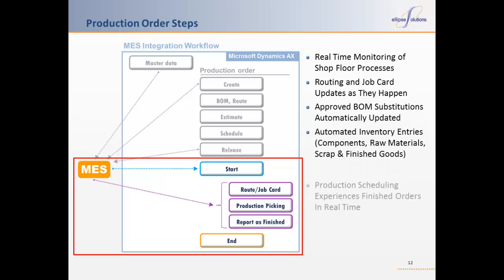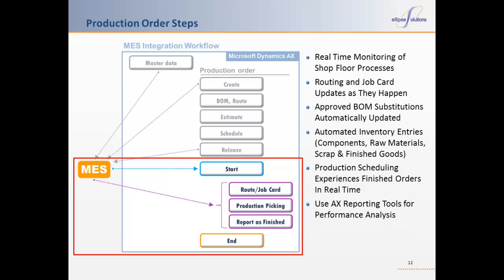The second part of the bisynchronous link — pushing information from the shop floor machines back to AX — allows you to watch orders progress as they occur. Route and job cards are updated in real time, and pre-approved BOM substitutions are booked as they happen. This return information also allows for updating of inventory tables, cost tables, automated finished good entries, as well as the HR, payroll, and fixed asset entries discussed earlier. Since you now have a single version of what's going on, there's no need to integrate reports from third-party shop floor systems into financial reports from AX. You have a single database to slice and dice using the reporting tools already available in Dynamics AX or other third-party tools.